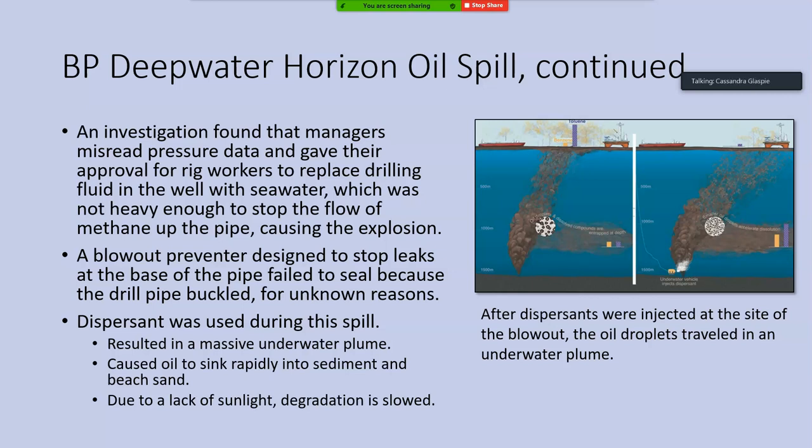An investigation was launched after this catastrophic environmental disaster. It found that the accident was caused by managers misreading pressure data, and they gave approval for rig workers to replace heavy drilling fluid in the well with seawater. That seawater was not heavy enough to stop the flow of methane up the pipe, and they ignored the pressure and didn't do anything to stop it from traveling up to the surface, causing the explosion.